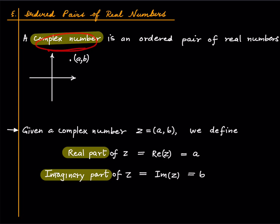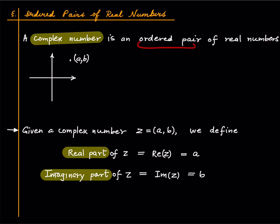A complex number is an ordered pair of real numbers. By ordered pair we mean things of this form a comma b, where a is a real number and b is a real number.